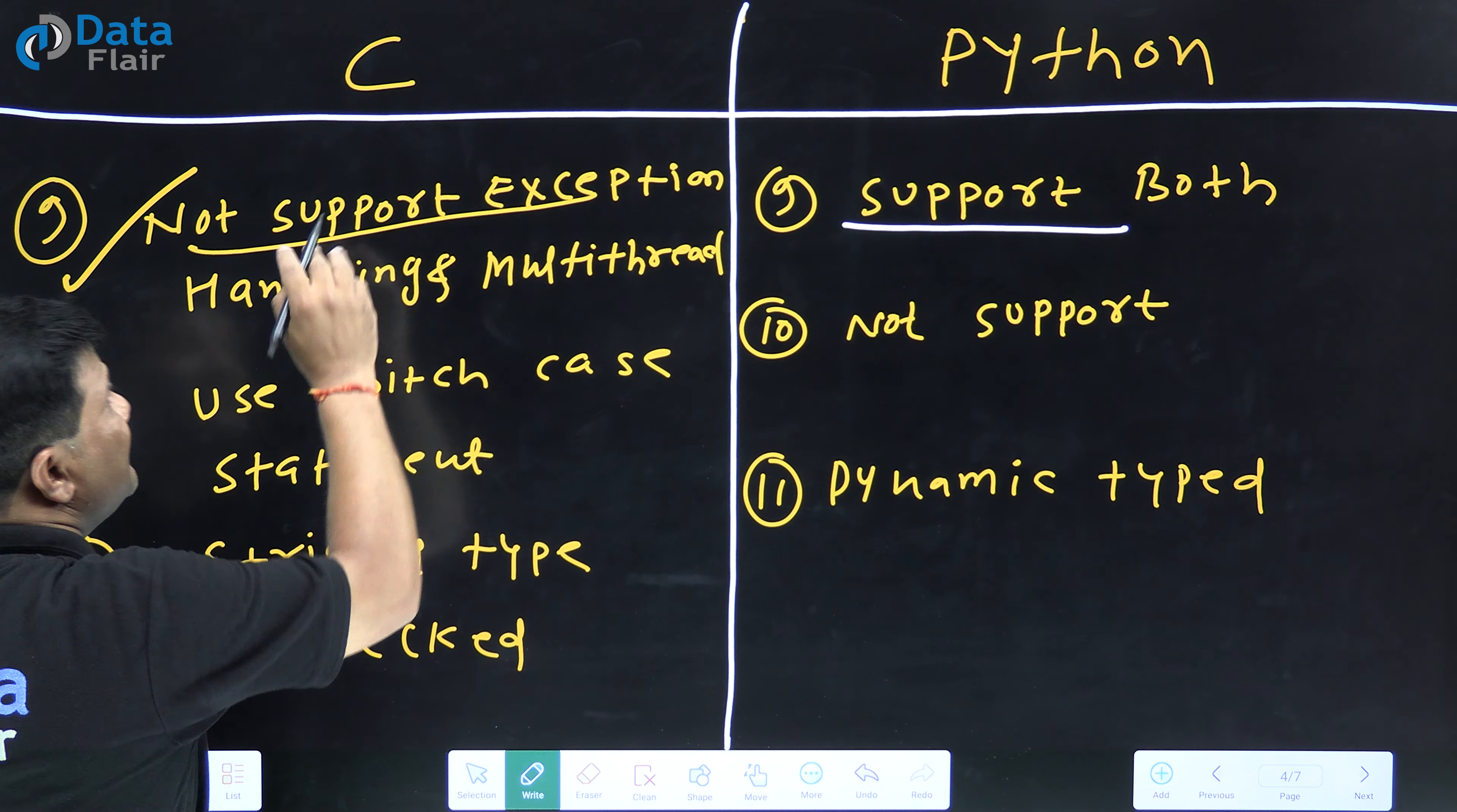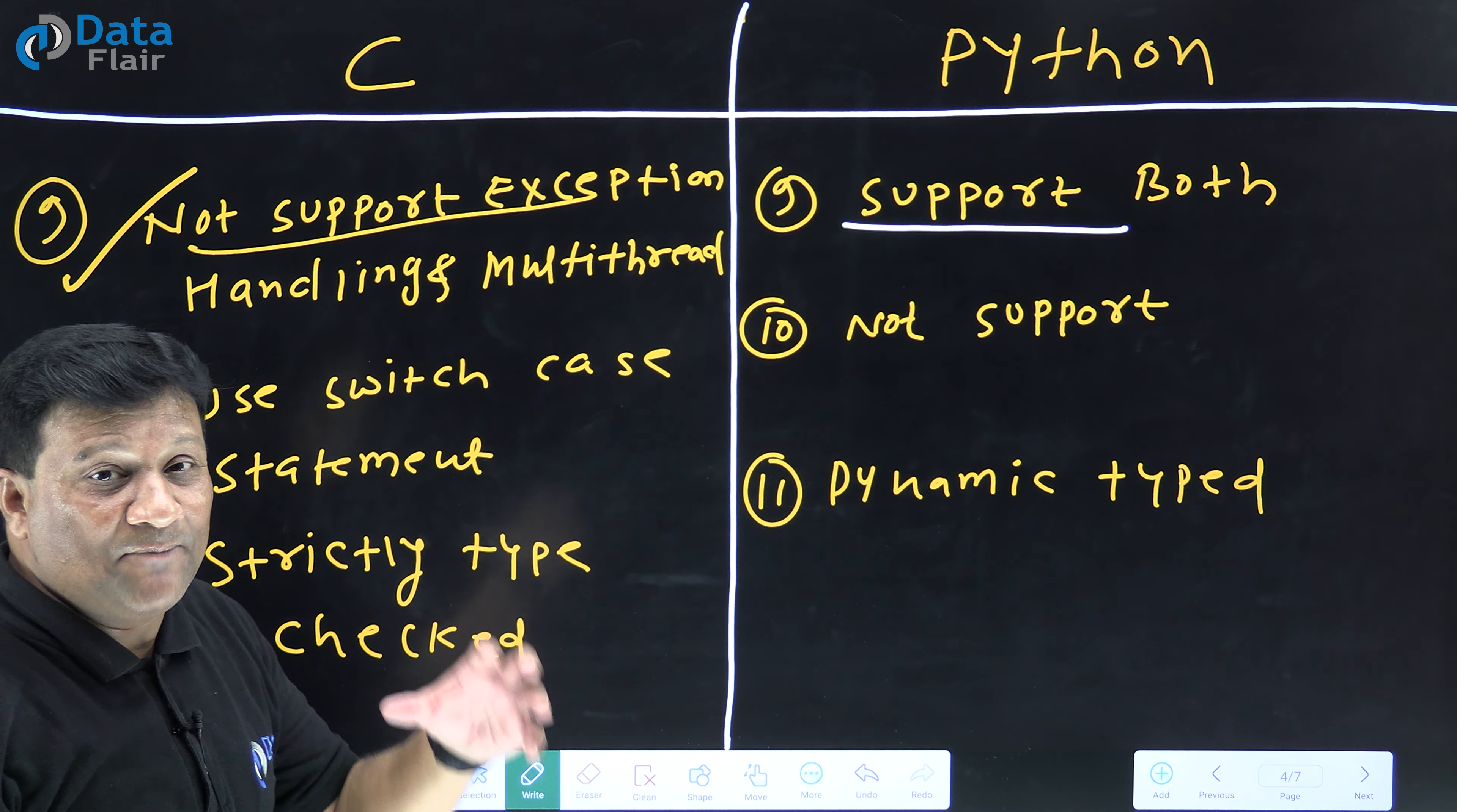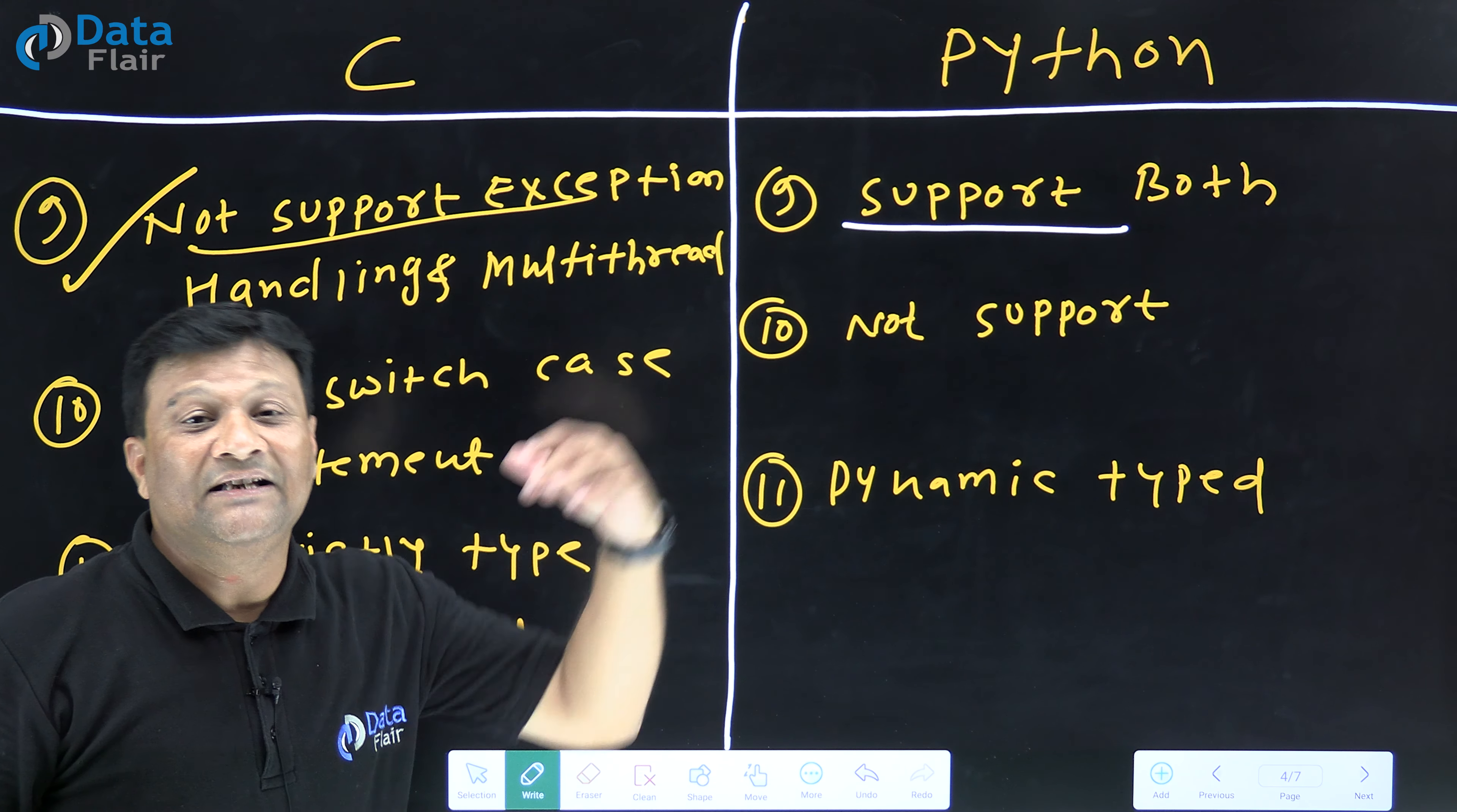So this is one of the most important factors where Python differentiates with C. Exception handling and multi-threading is one of the requirements of modern languages. And right now obviously, Python is better than C language because C does not have exception handling and multi-threading concept.